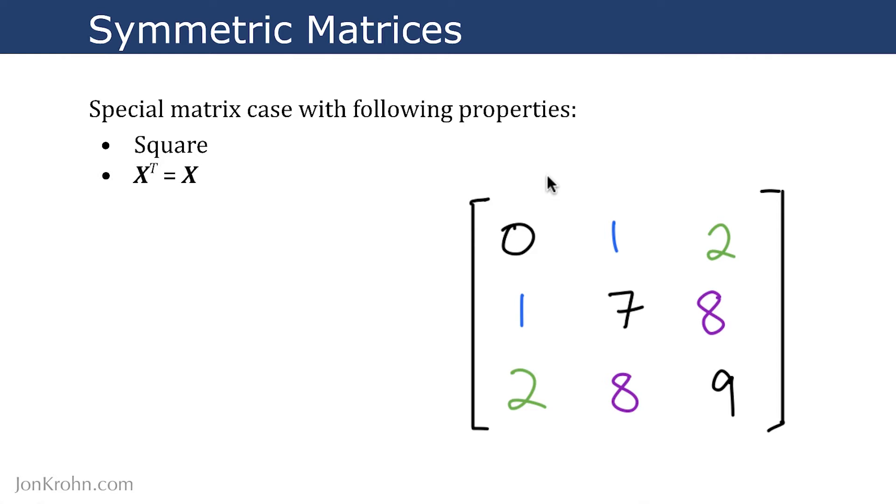The other key property is that the transpose of the matrix is equal to the matrix itself. So that means you can have anything along the main diagonal of the matrix, but above and below there must be a symmetrical mirror image, so that when you transpose, you end up with the same matrix.